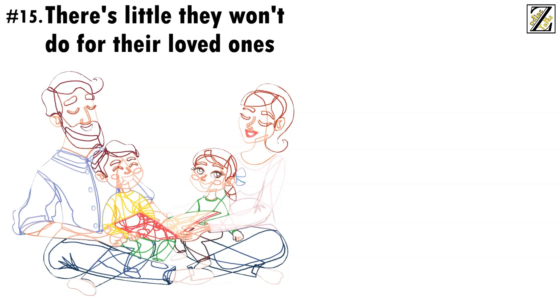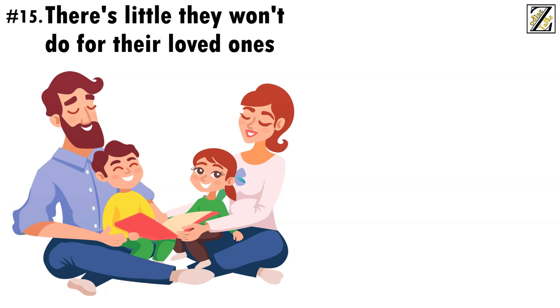Number 15, There's little they won't do for their loved ones. While Geminis won't fall in love at the drop of a hat, once they're in love, there's little they won't do or sacrifice for their partner. The same applies to friendships and family relationships. Geminis may be independent, but their close friends and families are incredibly important to them.